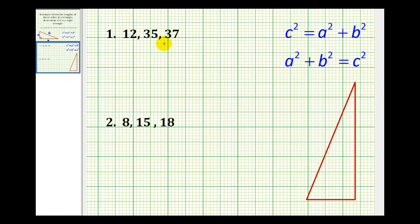So if we're given the lengths of the sides of a triangle, if it doesn't satisfy this equation, it's not a right triangle.